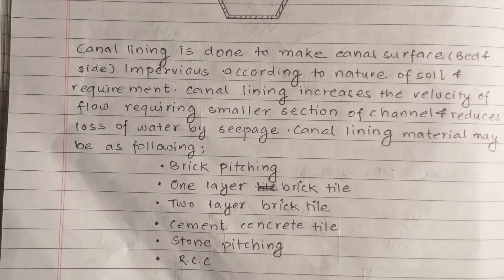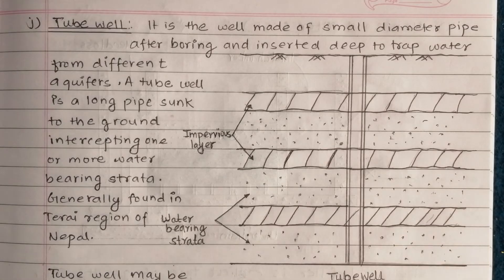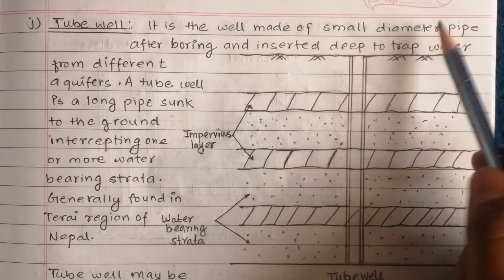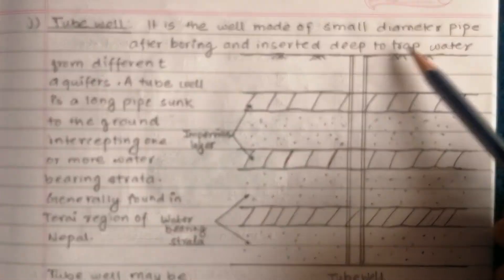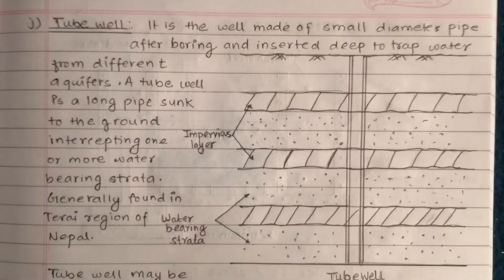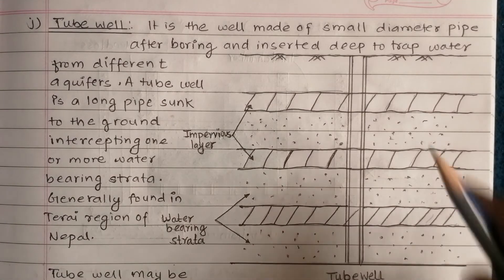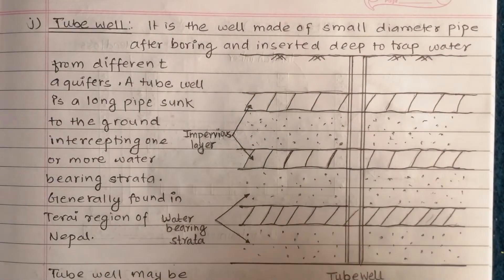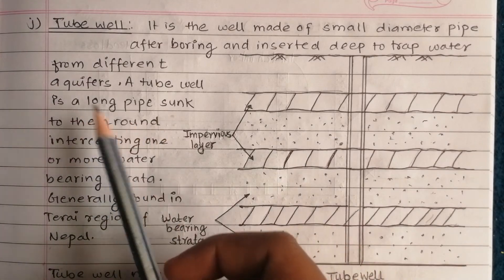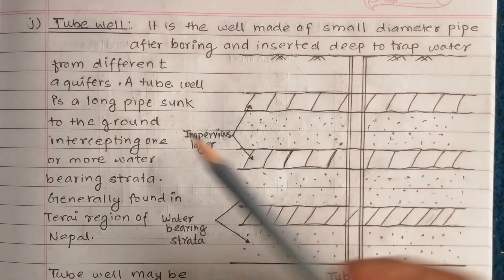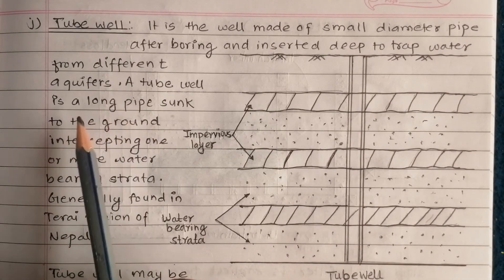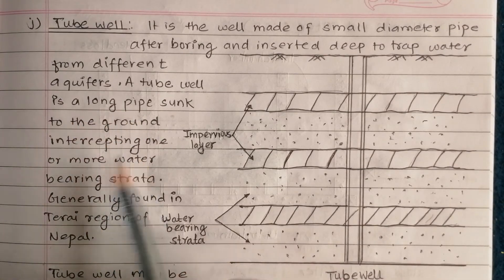This is a tube well made of a small diameter pipe that is bored and inserted deep to trap water from different aquifers. It is bored into the ground, intercepting one or more water-bearing strata.